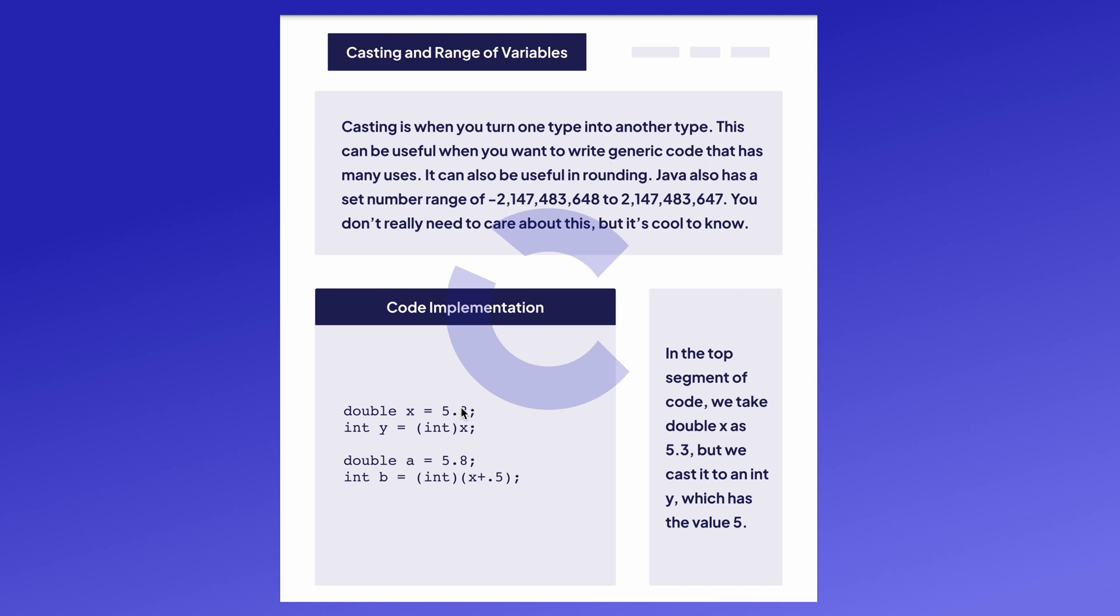Lastly, Java has something called casting. Casting is when you want to turn one type into another type, and this is very useful when you want to write generic code and encompass a variety of data types.